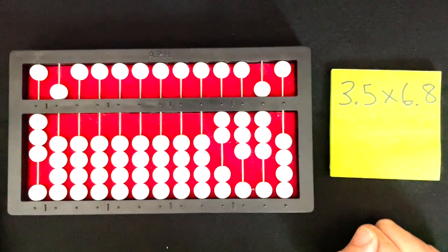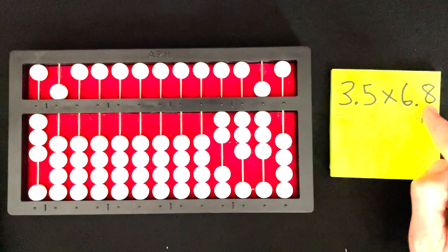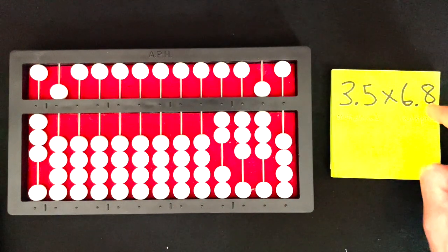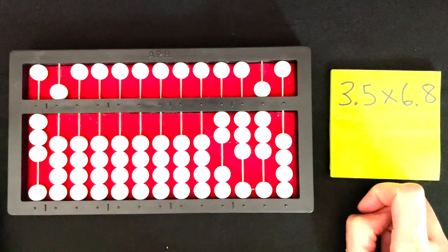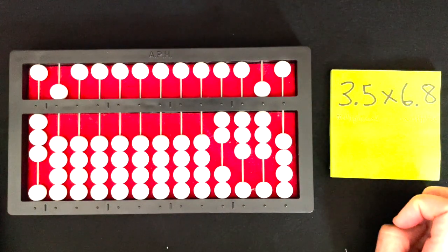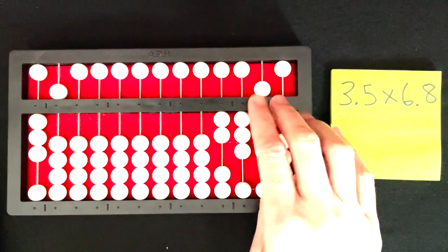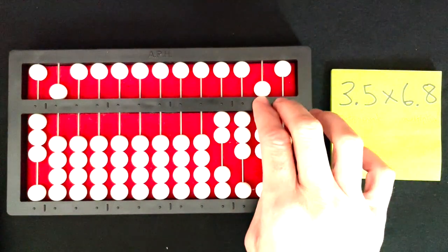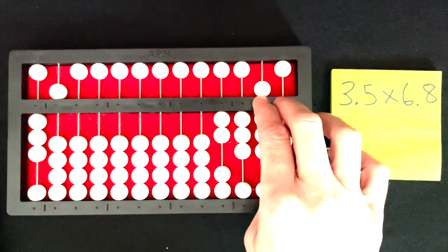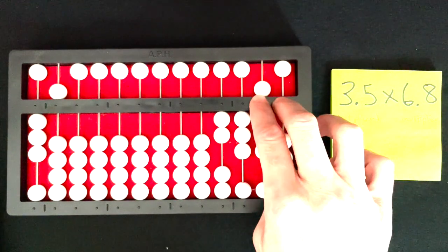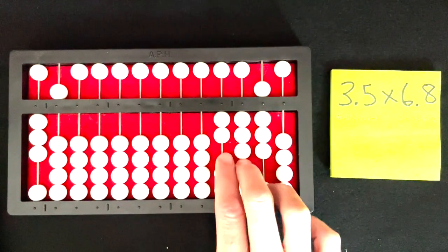So now is where the decimal point comes into play. I see I have one decimal point to the right of the multiplier and one decimal point to the right of the multiplicand, so that's two decimal places that I need to take into consideration. So I feel my abacus here, these first two rods are going to be to the right of my decimal point.